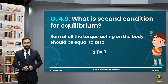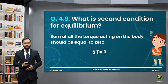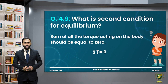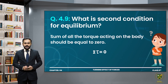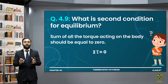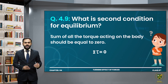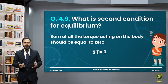Question 4.9: What is the second condition for equilibrium? If the sum of all the torques acting on the body is equal to zero, then the body satisfies the second condition of equilibrium — that is, Στ = 0. If all the torques acting on a body sum to zero, then the body satisfies the second condition of equilibrium.